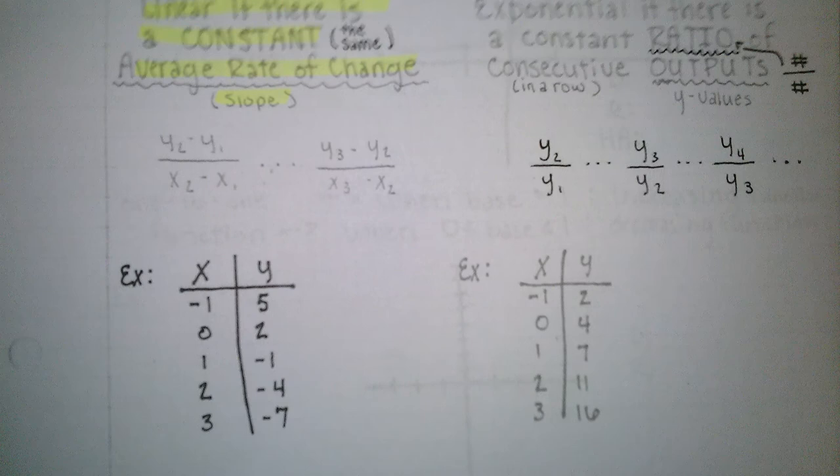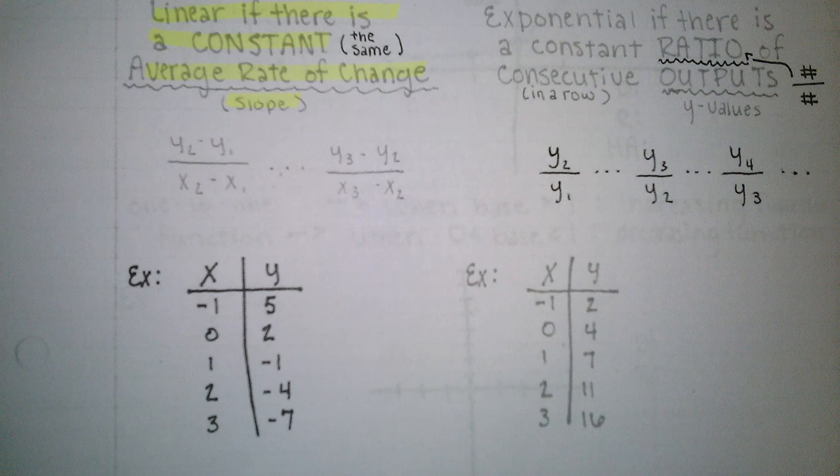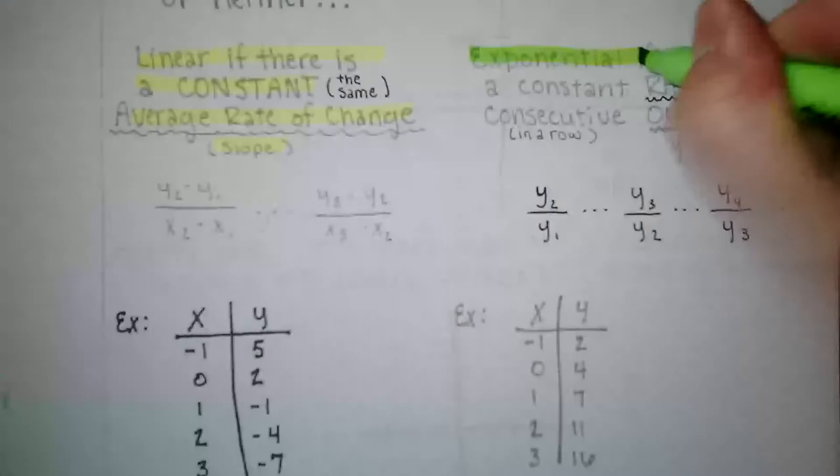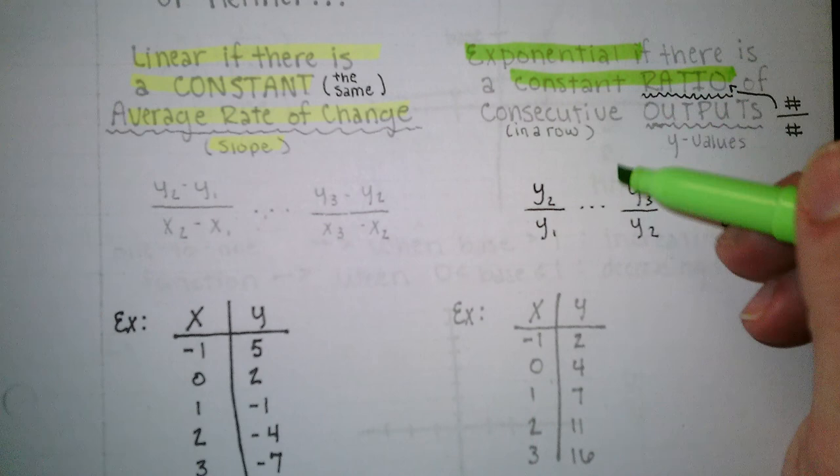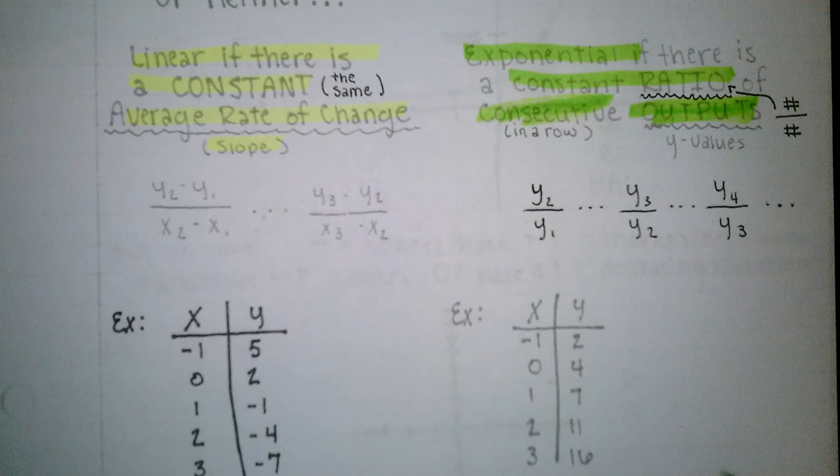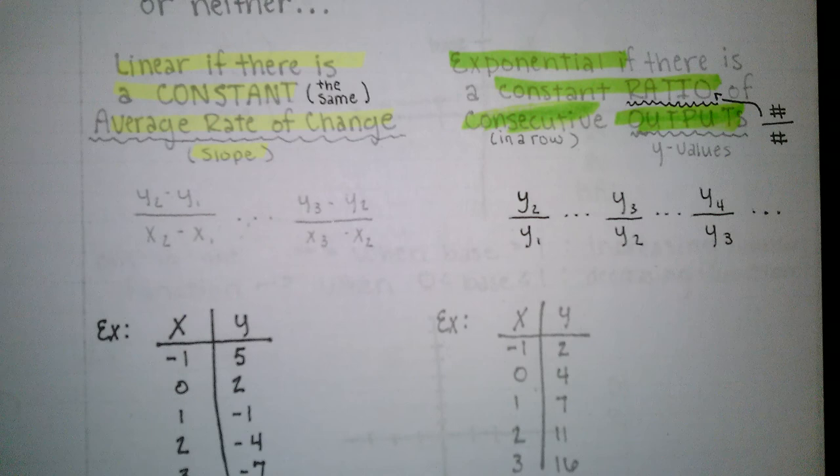Then we have an exponential function if there is a constant ratio. Ratio means that we divide the two numbers. So constant ratio of consecutive outputs. Outputs are the y values. Ratio means we are dividing. So linear, we're going to check by subtracting. Exponential, we check by dividing.